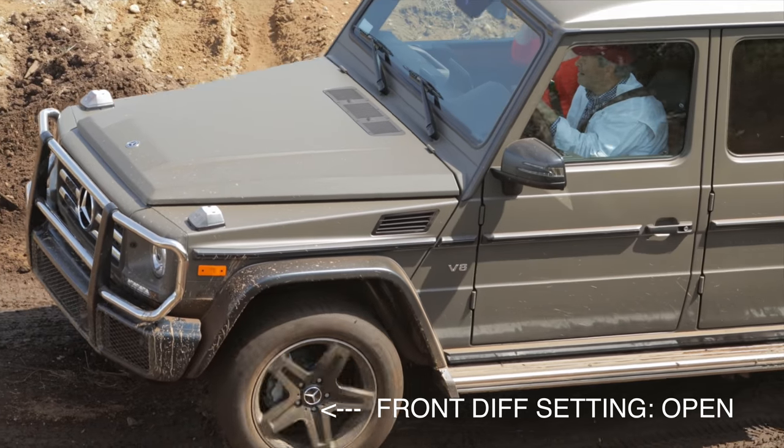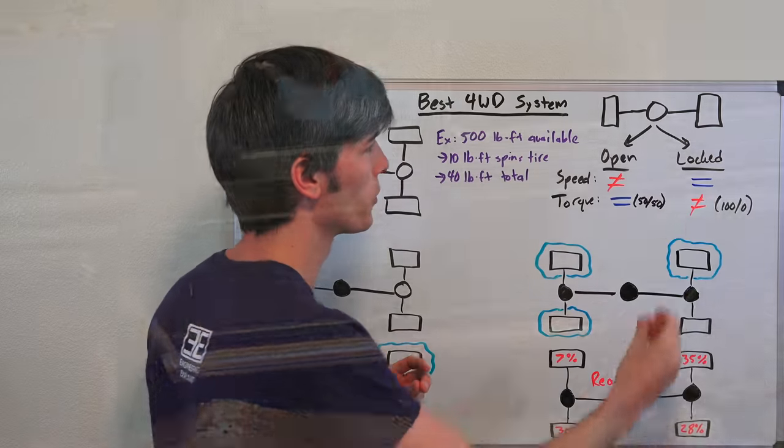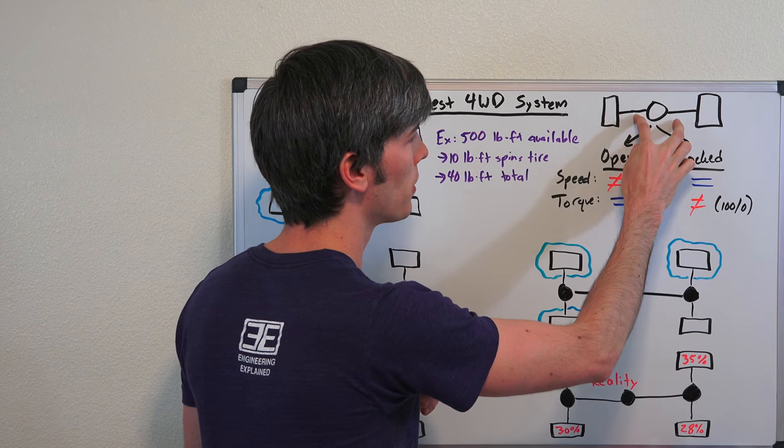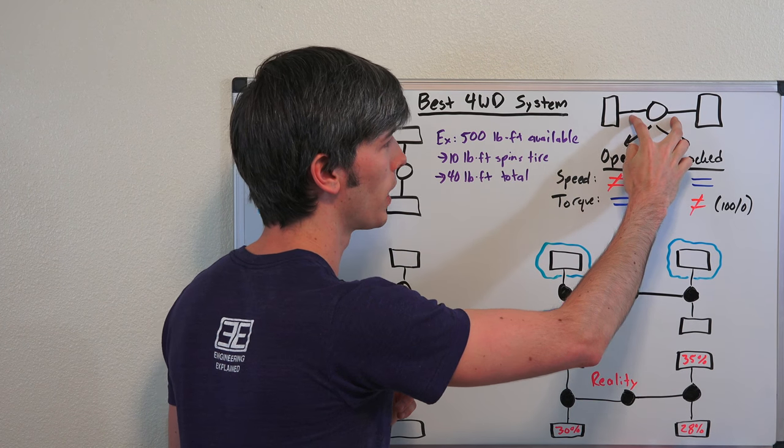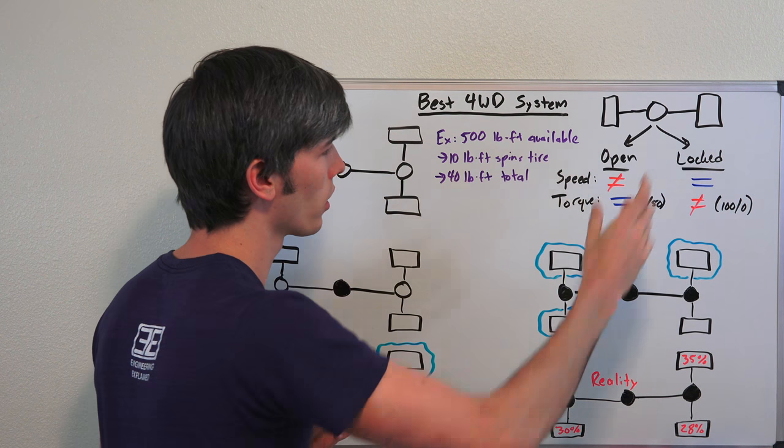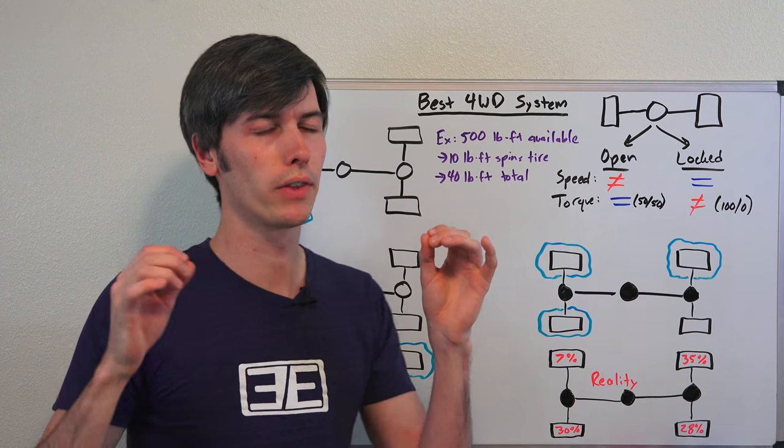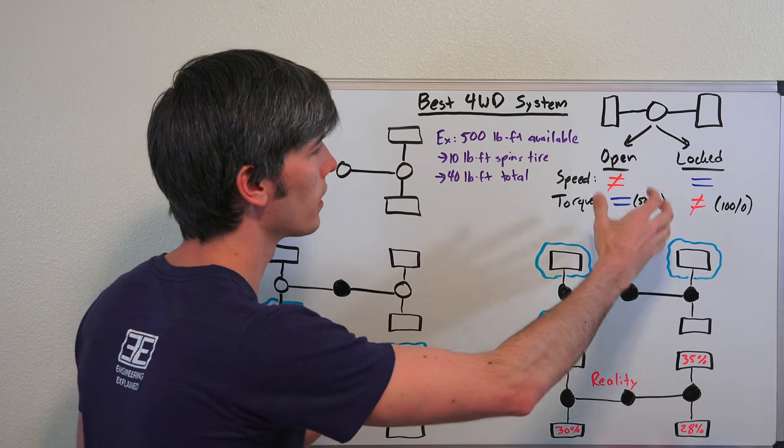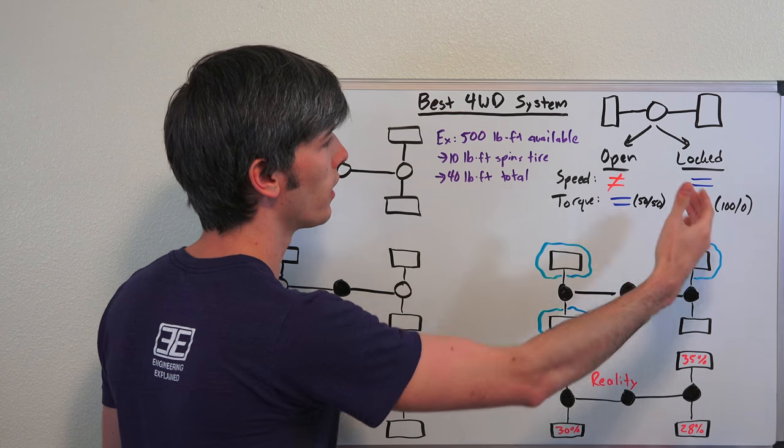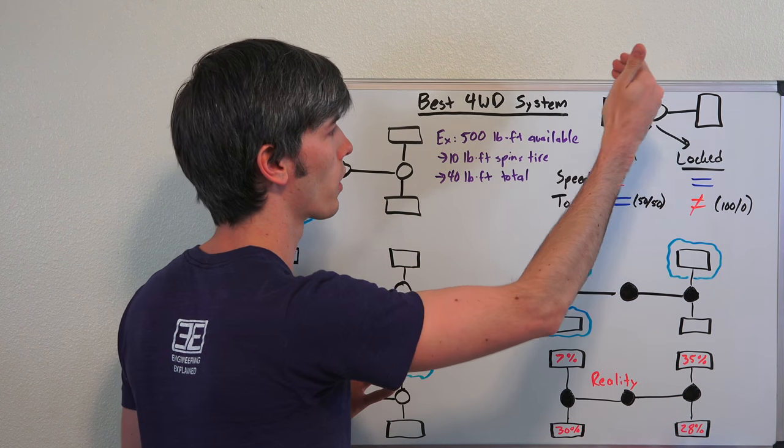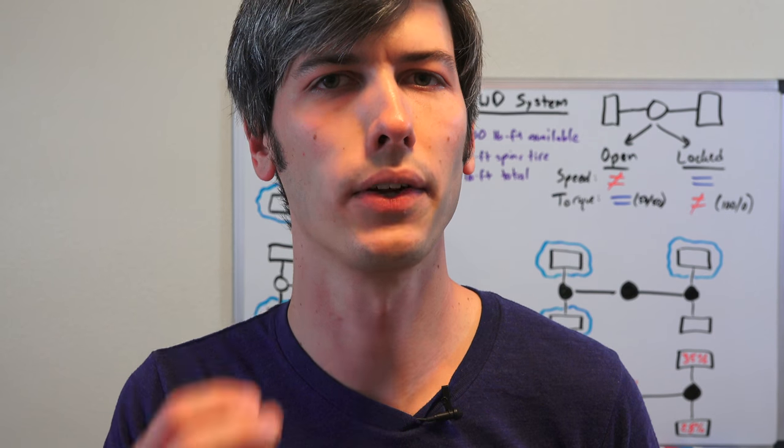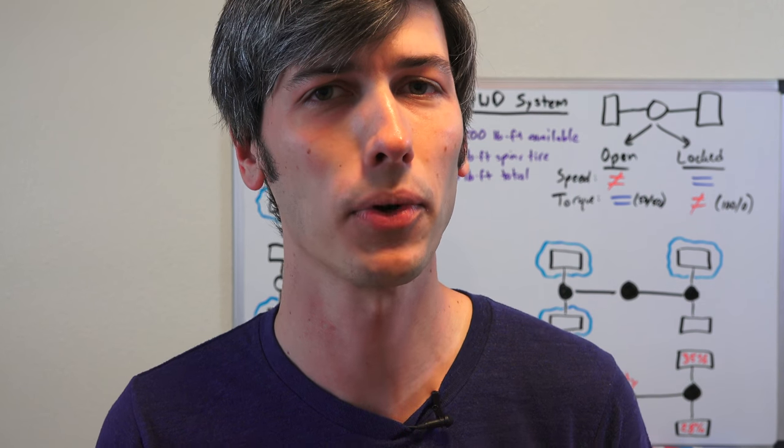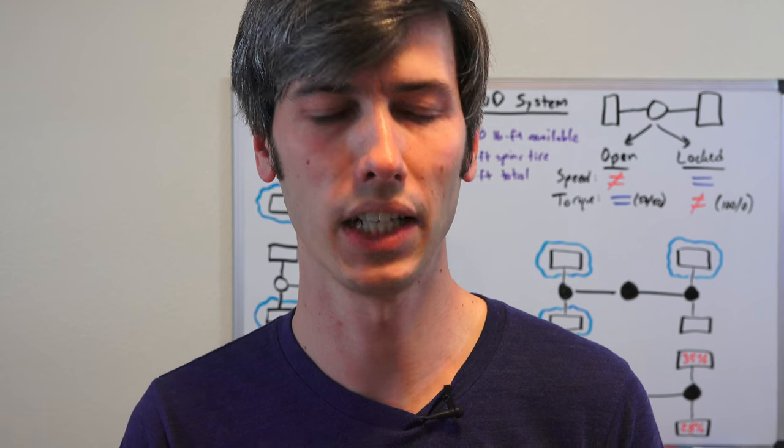So we're going to get into why that is, but know that a locked differential—that means this center is locked up. These two axles are forced to rotate at the same speed, meaning both of your wheels are going to rotate at the same speed. However, the torque split can vary depending on conditions. So theoretically, if the axle is strong enough, you could send up to 100% of the available torque to just one of those wheels. So how do I know that a locked differential is capable of sending 100% of the available torque to one individual wheel?